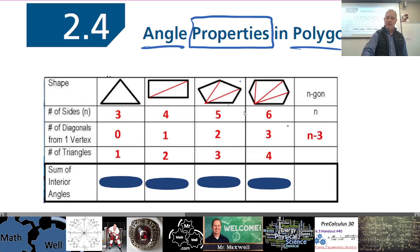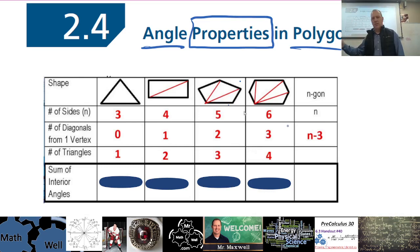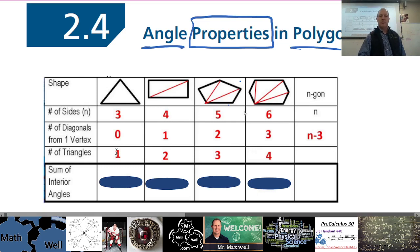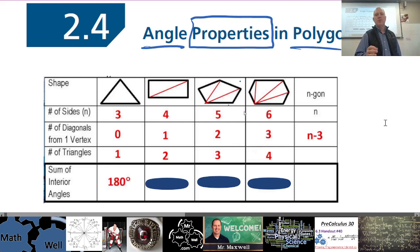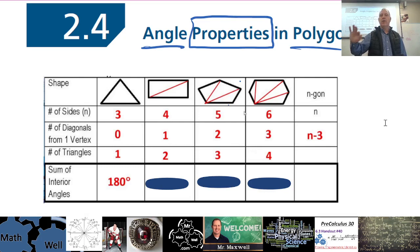I'm going to focus on this chart for the lesson and lead up to this last line — the sum of interior angles. We know what the sum of interior angles is for a triangle from last day, right? All the angles of a triangle add up to 180 degrees. Now let's identify a pattern going forward with other polygons — polygons with more sides.